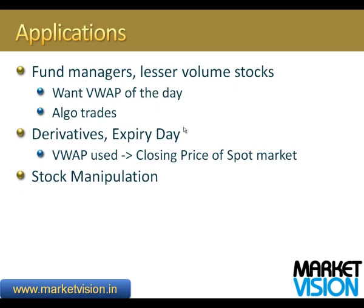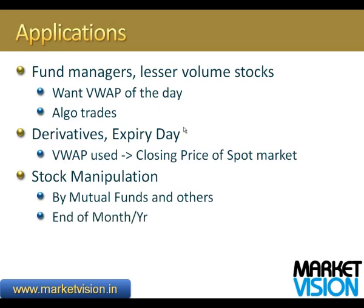The last thing VWAP is used for — and this is not something that's legal — is stock manipulation by mutual funds and other companies. At the end of a year, quarter, or month, they want to show that their assets under management are high. For stocks with an artificially low price, towards the 3:15–3:20 time, if they put in a large order, the stock can be made to rise 3 or 4%. Your fees as a mutual fund are related to the total asset value you control, which is related to the closing price of securities you hold. So on the last day of a quarter or year, there's an incentive to manipulate by doing a large purchase towards the end of the 3:15–3:30 window. They use it to move the VWAP, and although it isn't entirely legal, it's something you have to be aware of.